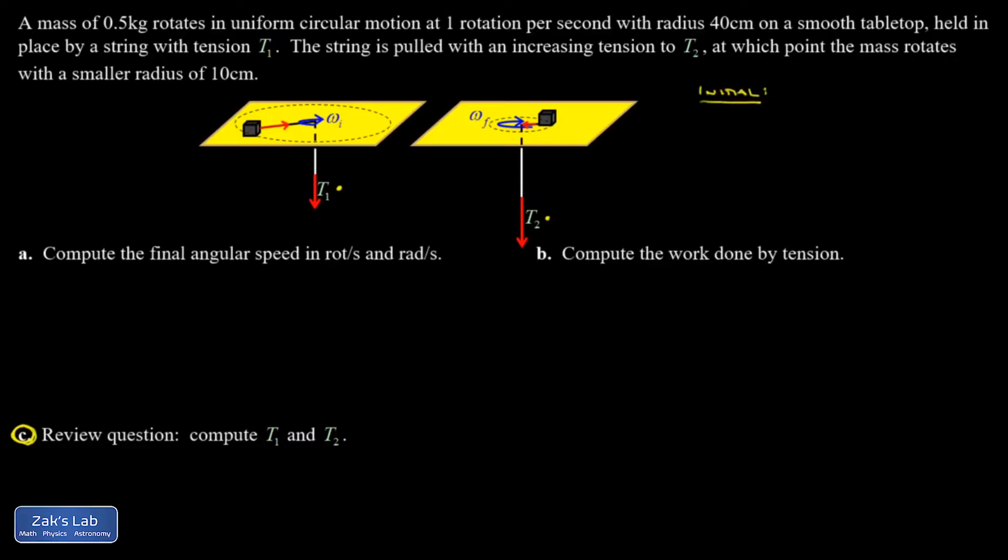I wanted to get some things out of the paragraph here for our initial state. The mass of our block is 0.5 kilograms. Our initial rotation rate is one rotation per second, but I'd rather write that in radians per second. One rotation is 2π radians. And the initial radius for this rotation is 40 centimeters or 0.4 meters. I also wanted to put another reminder up over here. The moment of inertia of a point mass is just going to be mr squared.